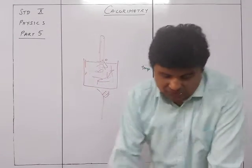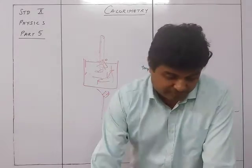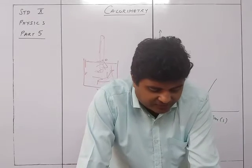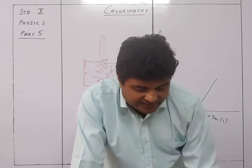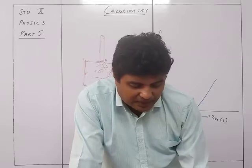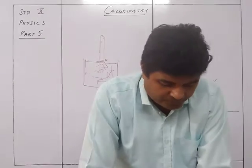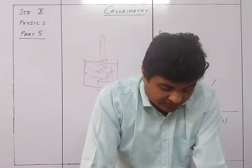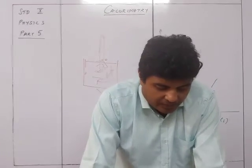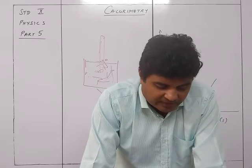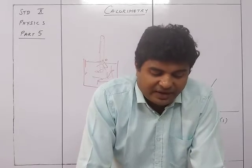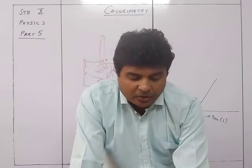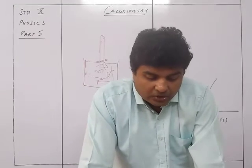To draw the heating curve of ice, take a boiling test tube and fill it half with ice chips. Insert a thermometer gently so its bulb does not touch the walls. Note the temperature — it will be zero degrees Celsius. Heat the bottom of the test tube slowly over a flame or by immersing it in hot water, noting the temperature after every half a minute until the water formed reaches 30 degrees Celsius.